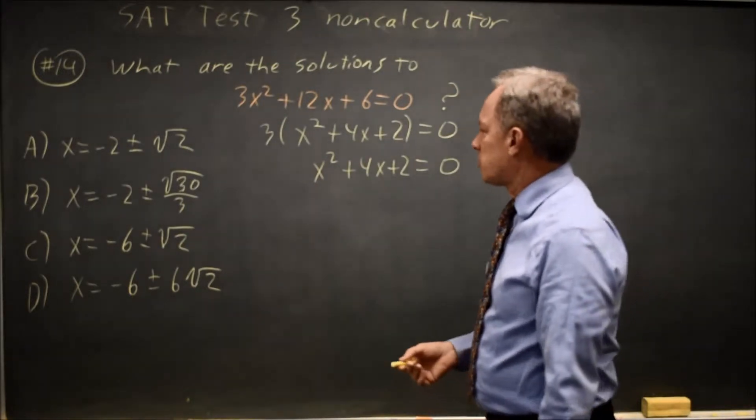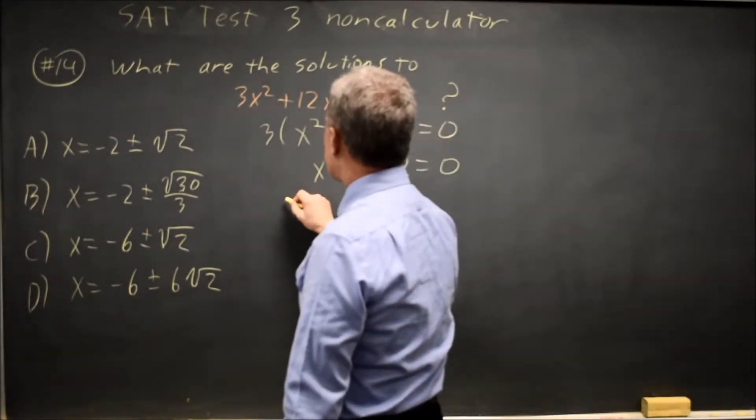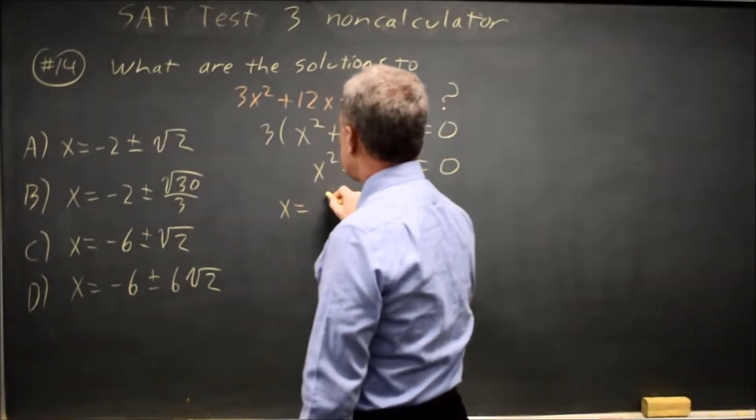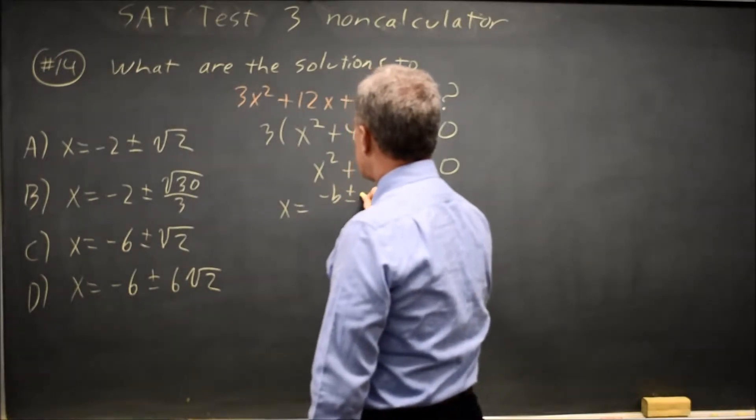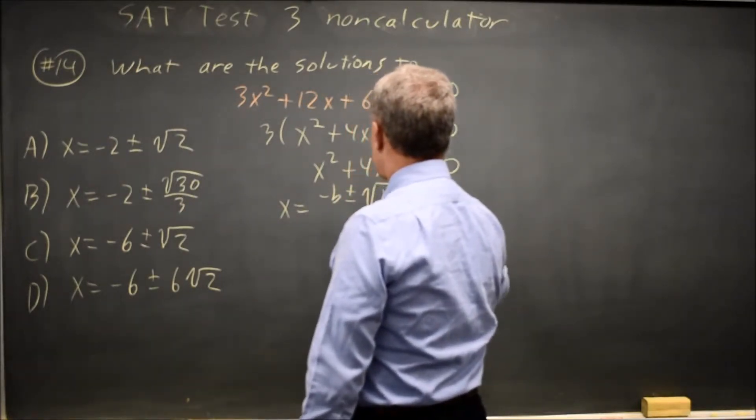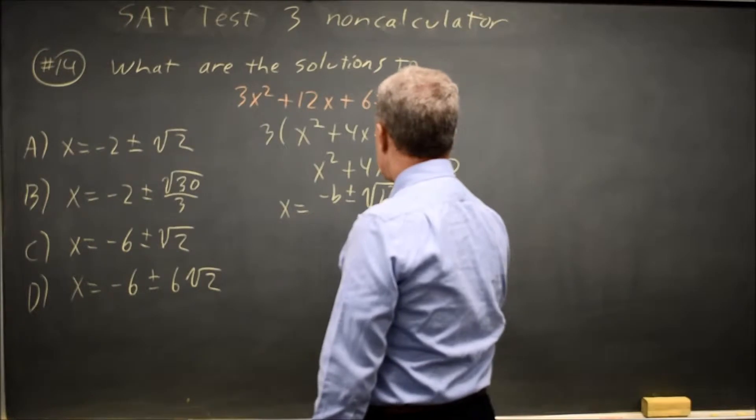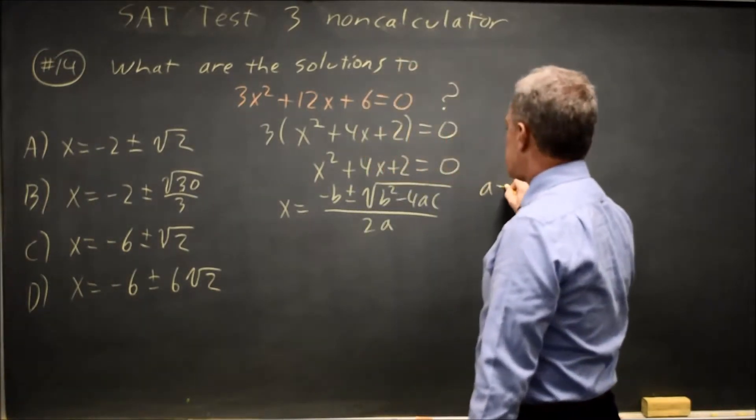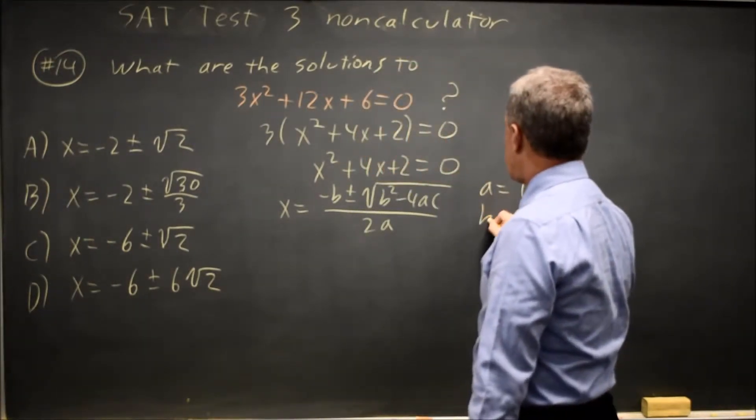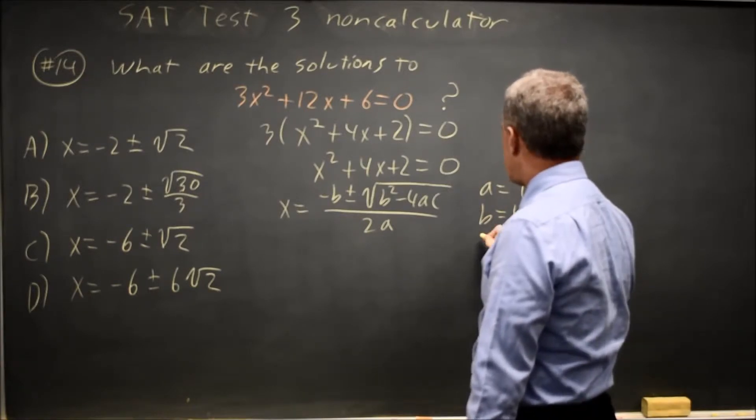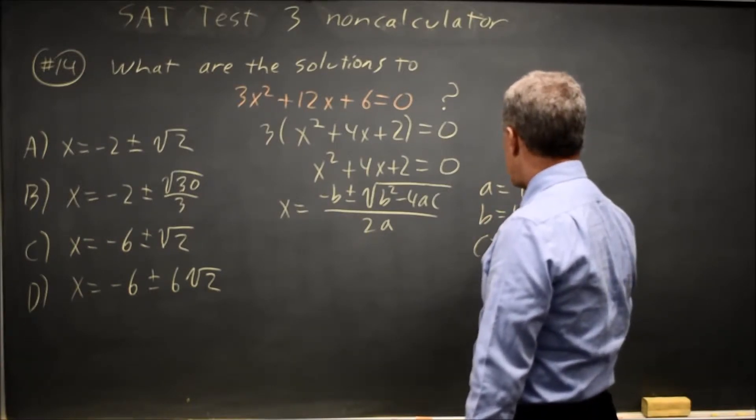That's going to make the arithmetic much easier on the quadratic formula. The quadratic formula says my x value is equal to negative b plus or minus square root b squared minus 4ac all over 2a, where a is the x squared coefficient 1, b is the x coefficient positive 4, and c is the constant positive 2.